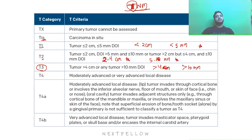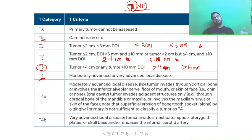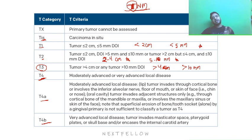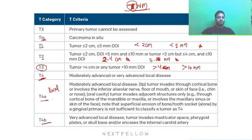In T4, suppose there is a carcinoma of the tongue — it will involve either the floor of the mouth, the gingiva, buccal sulcus, or skin of the face. T4a involves surrounding or neighborhood structures. T4b involves distant structures — for example, the carcinoma of oral cavity extending into the skull base or going into the mediastinum through the parapharyngeal space.